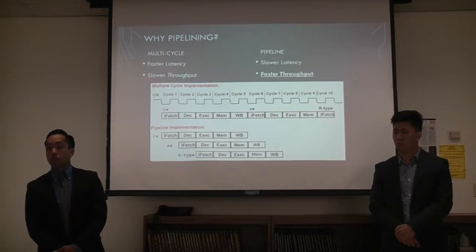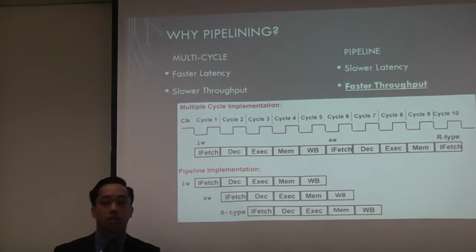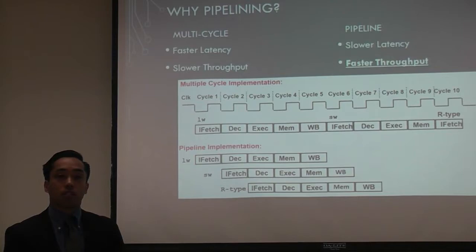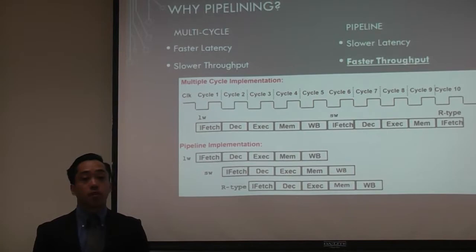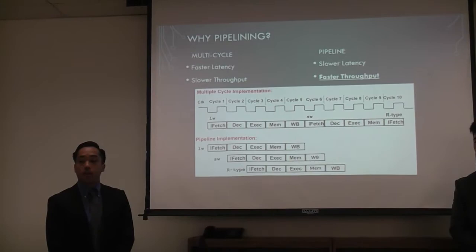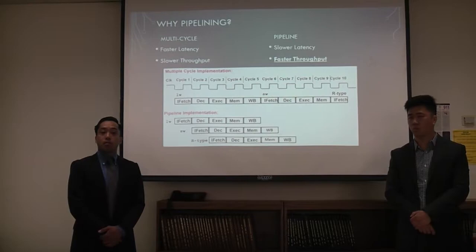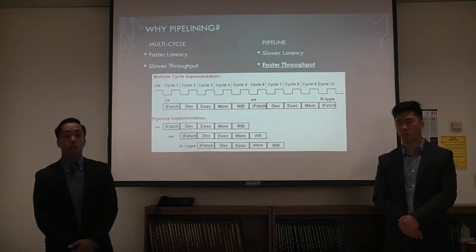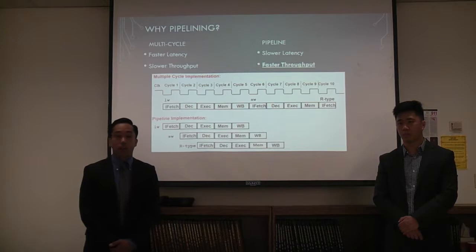We chose pipeline because we wanted something that can execute instructions very quickly. Pipeline allows us to fetch and decode at the same time. In a multi-cycle design, only one instruction executes at a time — the first must finish before the next begins. For example, a load word takes five clock cycles and a store word takes an additional four, totaling nine clock cycles for both instructions to complete.